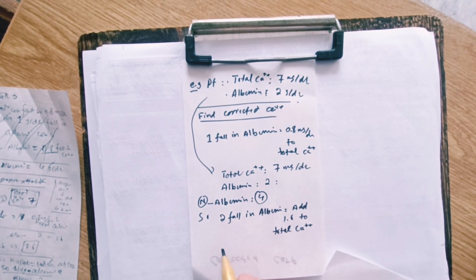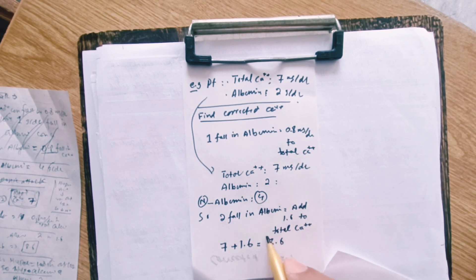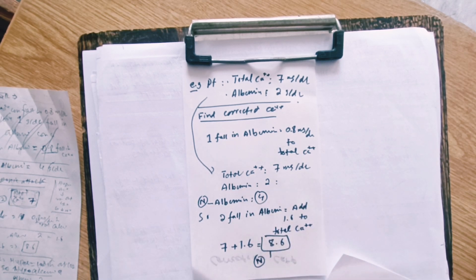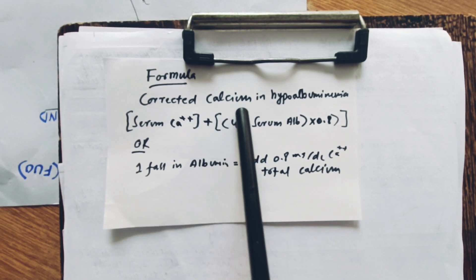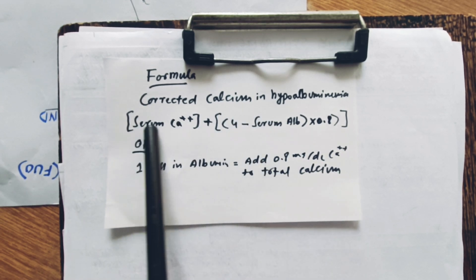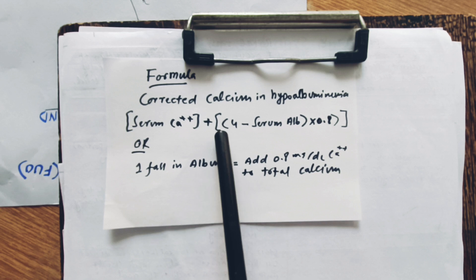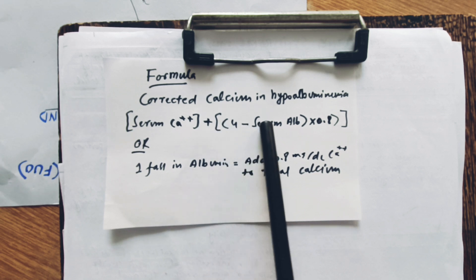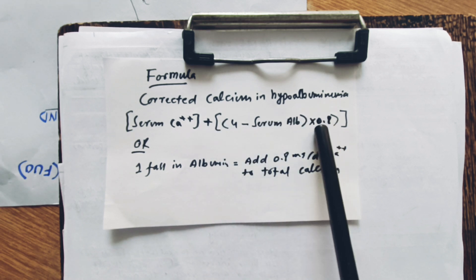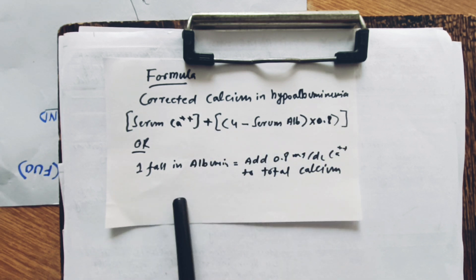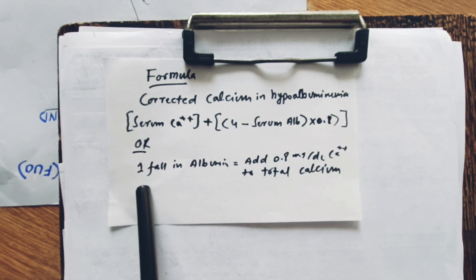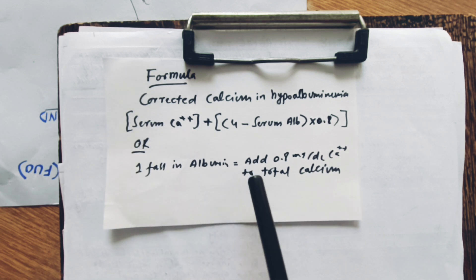So 7 plus 1.6 equals 8.6 — this is the corrected total calcium value. The formula for corrected calcium in hypoalbuminemia: for every one fall in albumin, add 0.8 mg/dL of calcium to total calcium.